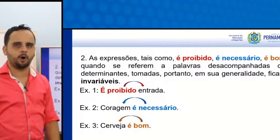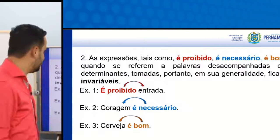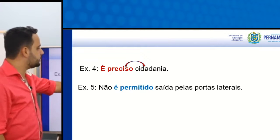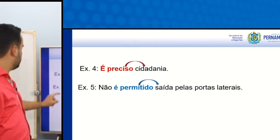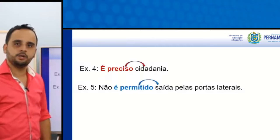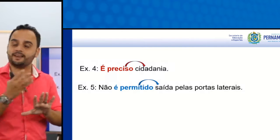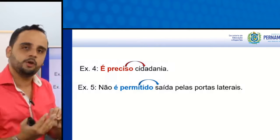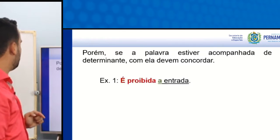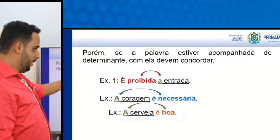Cerveja é bom. Percebe os exemplos? Cerveja eu não gosto, mas deixa o exemplo. Exemplos: é preciso cidadania; não é permitido saída pelas portas laterais. Todos esses cinco exemplos estão sendo apresentados na sua forma genérica, sem o determinante, sem o artigo. Porém, se a palavra estiver acompanhada de determinante, com ela devem concordar.